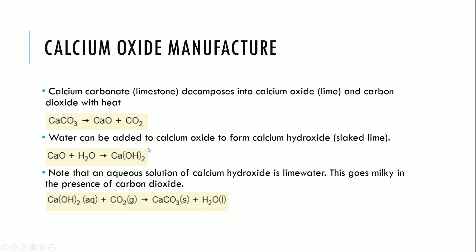Water can be added to calcium oxide to form calcium hydroxide, which is called slaked lime. An aqueous solution of calcium hydroxide is called limewater. Limewater turns milky in the presence of carbon dioxide: calcium hydroxide reacts with CO₂ to produce calcium carbonate and water, causing the solution to go milky.